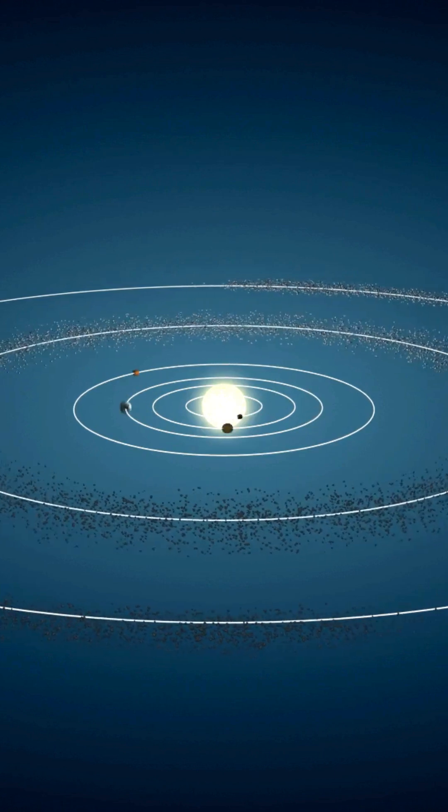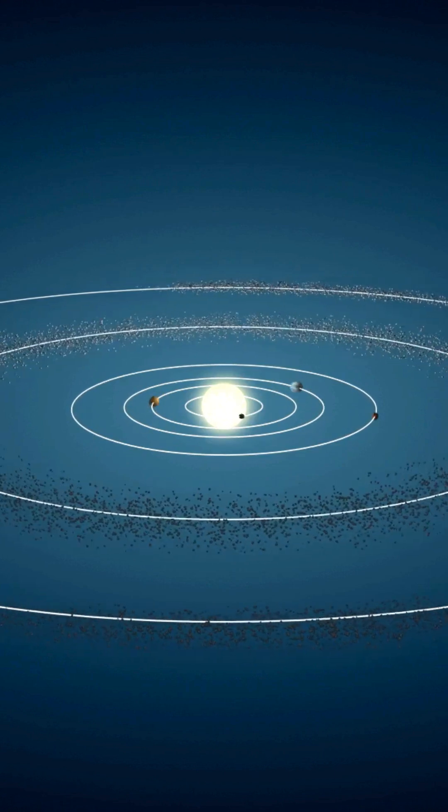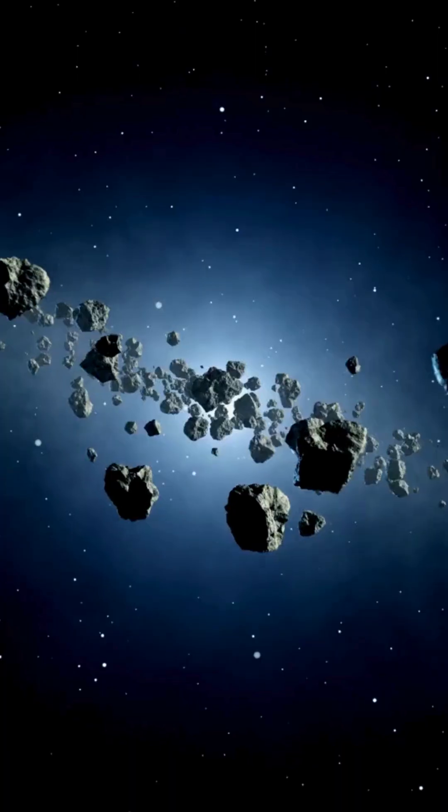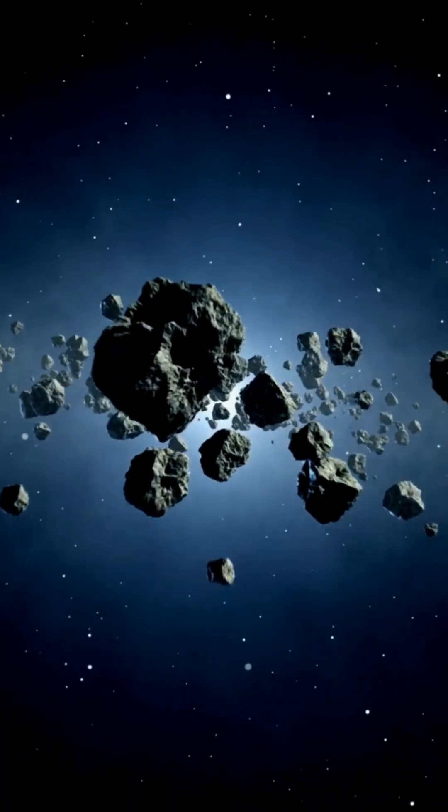The outer solar system is a vast, icy frontier that begins just beyond Neptune, where the Kuiper Belt stretches from 30 to 50 times the distance between Earth and the Sun.